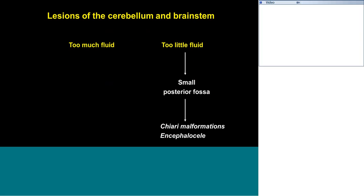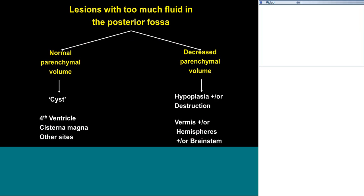For those of us that see these patients in the front line or secondary line, they usually present to us either as lesions of the posterior fossa with too little fluid — not the subject of today's talk, usually due to a small posterior fossa — or we're going to focus on those lesions where there appears to be excess fluid on ultrasound and/or MRI scan. That could be the result of normal parenchymal volumes and a cyst-like structure, a cystic apparent accumulation of CSF in the fourth ventricle, cisterna magna, or other areas. Or it can be due to decreased parenchymal volume, an ex-vacuo mechanism, due to hypoplasia and/or destruction. We're going to focus primarily on hypoplastic causes today.